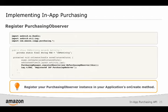Now that we have a PurchasingObserver, we need to register it with the PurchasingManager so that we can begin calling the In-App Purchasing API. This should be done in your application's onCreate method. The PurchasingObserver callback matching the register call is onSdkAvailable. The callback returns a boolean that you can check to see whether the app is running in test mode against SDKTester or in the live production environment. If you're using the receipt verification service, this boolean can be used to toggle between pointing to the live RVS server and the RVS sandbox.